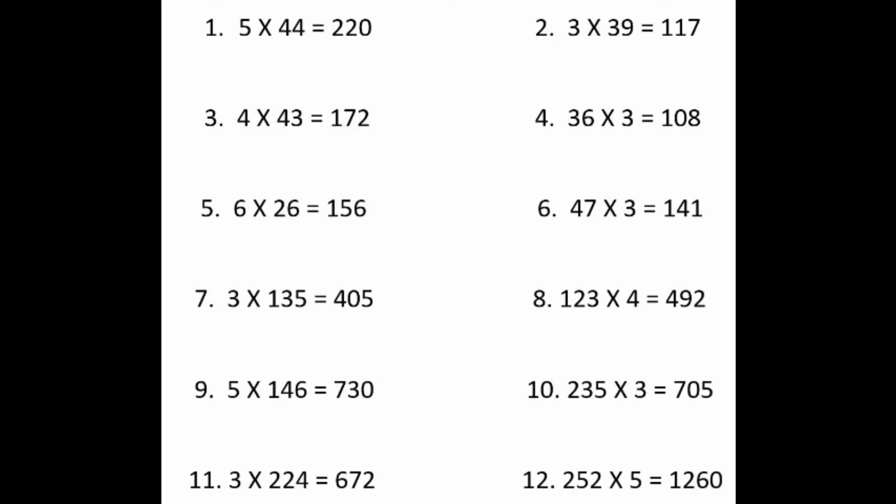Number 8, 492. Number 9, 730. Number 10, 705. Number 11, 672. And finally, number 12, 252 times 5 is 1260. Well done if you got them all right. Award yourself some house points depending on how hard you think you tried.